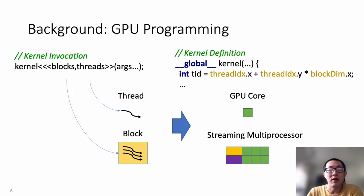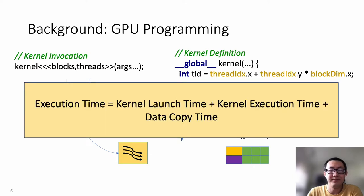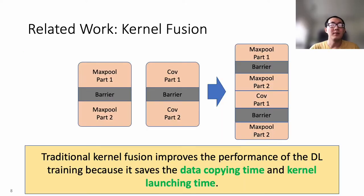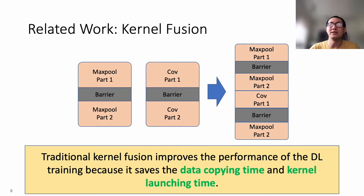A GPU program usually contains multiple blocks, which is called a grid. The execution time of a GPU program is determined by kernel launch time, kernel execution time, and data copying time. Going back to our example, we now know that fusing two kernels into one kernel allows the GPU to launch two kernels at the same time and avoid passing data between GPU and CPU.